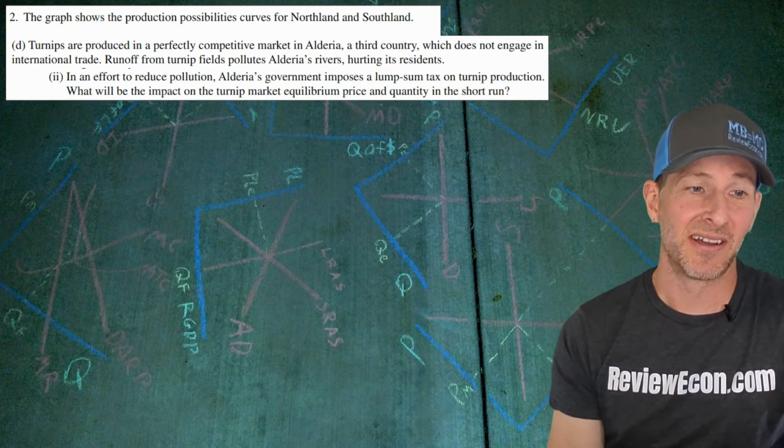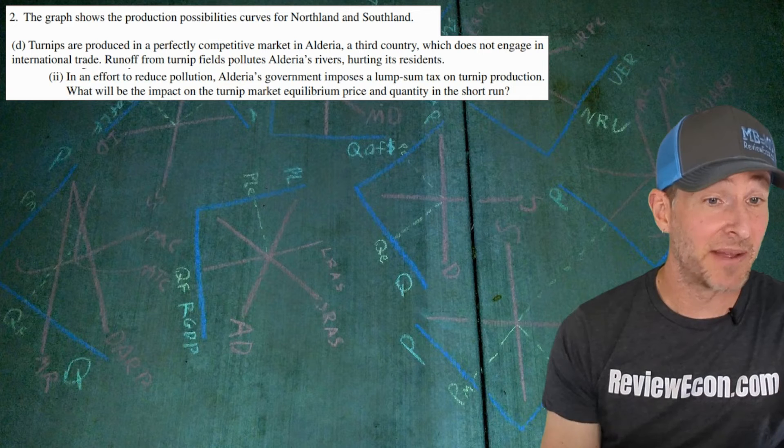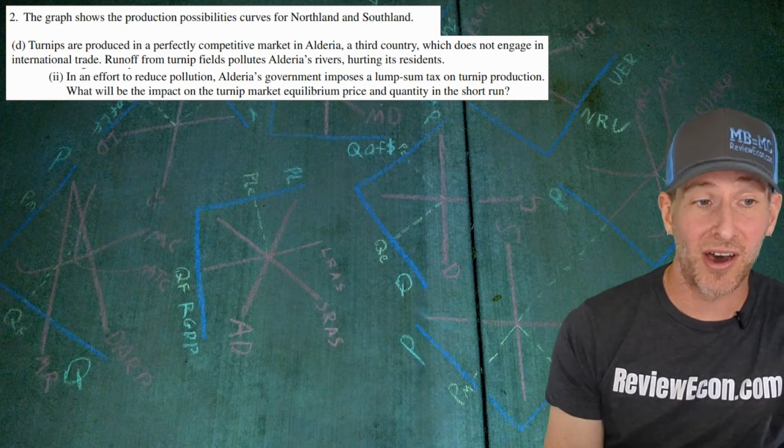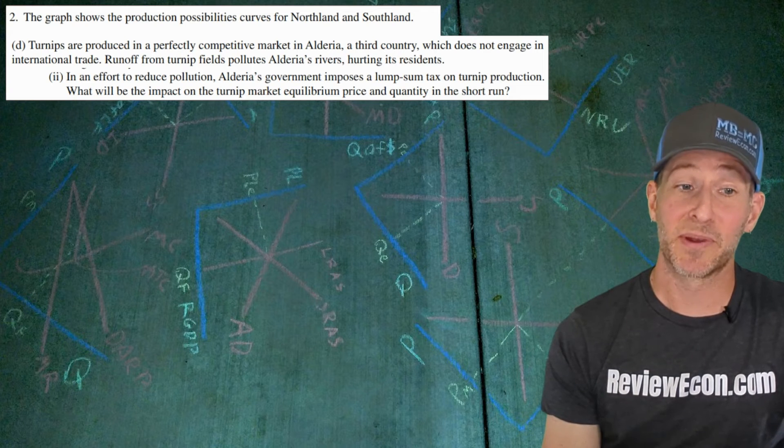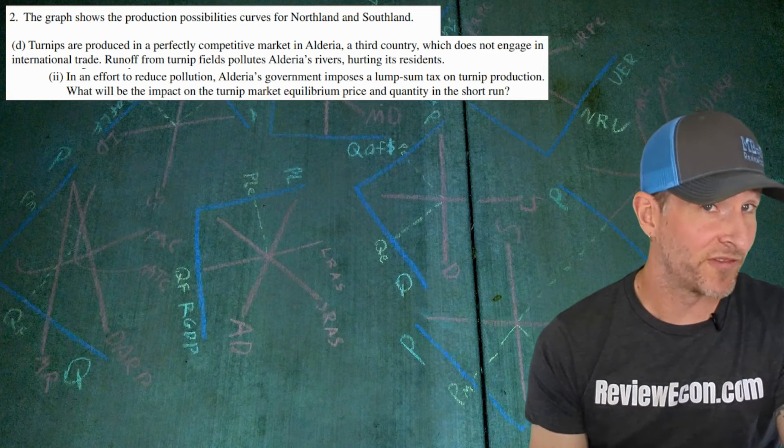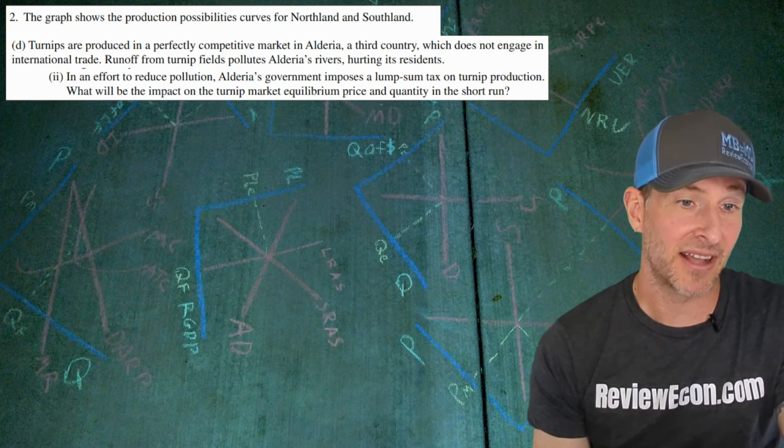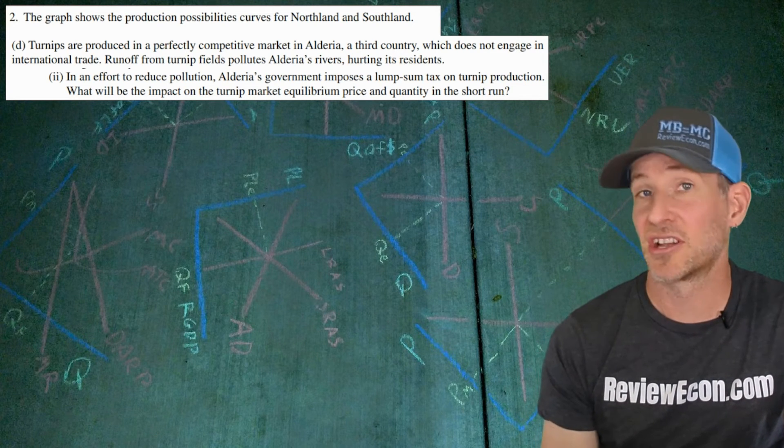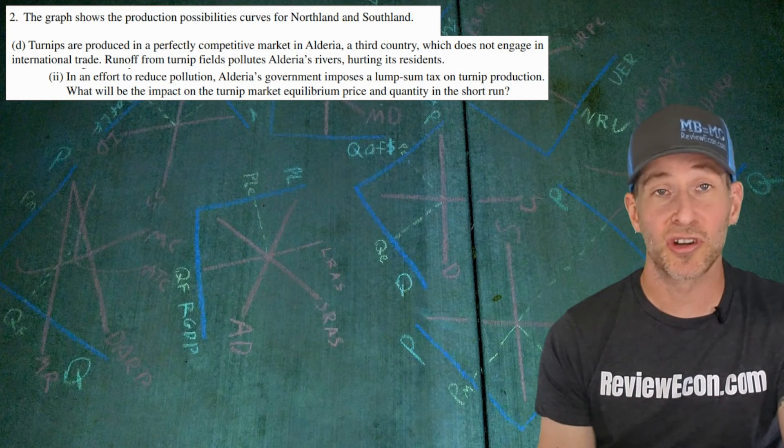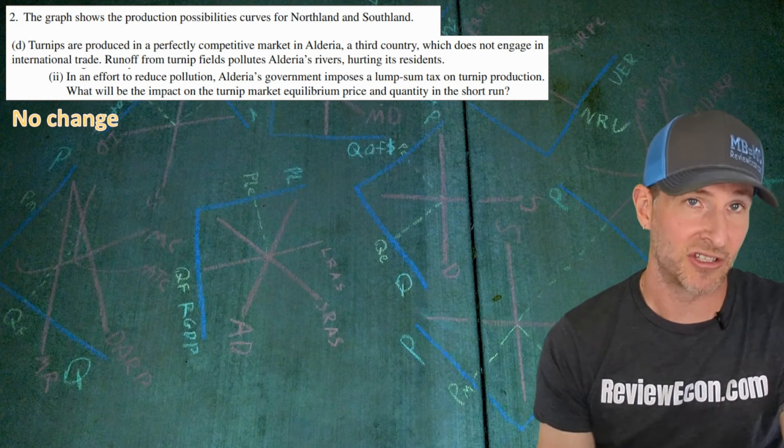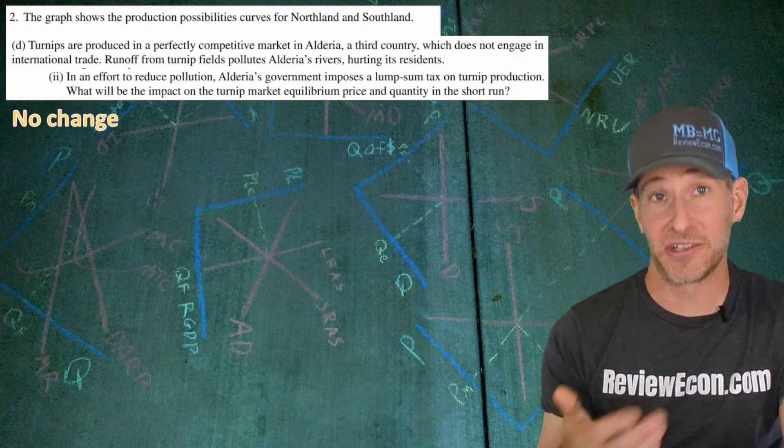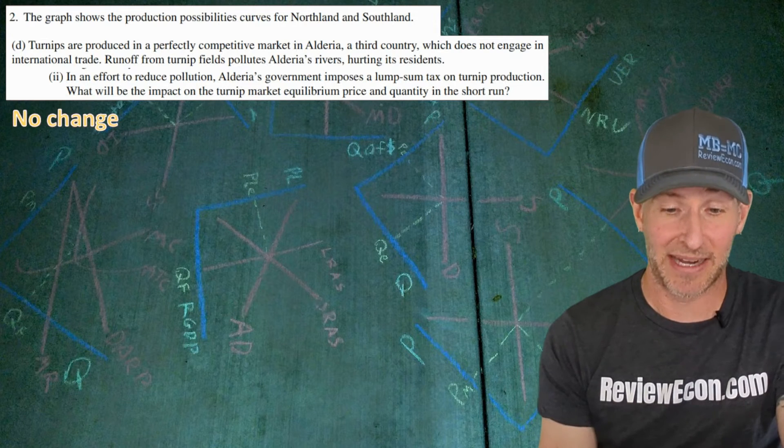Moving on to the next part. In an effort to reduce pollution, Aldaria's government imposes a lump sum tax on turnip production. What will be the impact on the turnip market equilibrium price and quantity in the short run? Now remember, a per unit tax is what is preferred to correct for negative externalities. A lump sum tax does not shift the marginal costs for the firms. And so in the short run, there will be no change in the price or the quantity. That's why we use per unit taxes instead to impact in the short run.